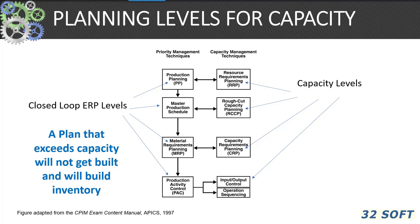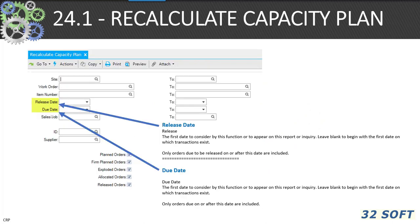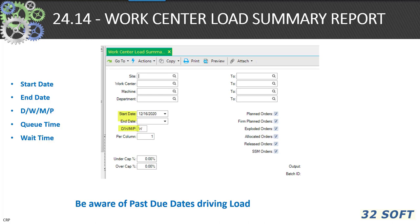Each closed-loop planning and priority level has a corresponding capacity level, and each is date-sensitive: resource requirements planning, rough cut capacity planning, CRP, and shop floor control. Remember, a plan that exceeds capacity will not get built and will build inventory. The 24.1 recalculate capacity plan allows you to recalculate the capacity plan from MRP work orders, routings, and resources by date based on due date and release date. The 24.14 work order load summary report is one of the primary tools for analysis of capacity issues with start and end dates, periods, queue times, and wait times.